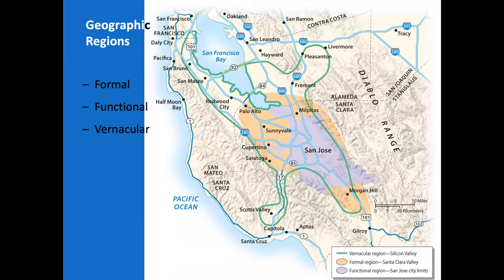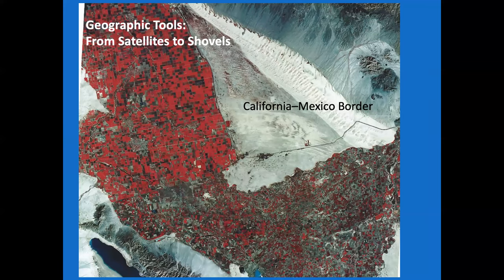We can talk about formal regions, functional regions, and vernacular regions. When you look at the California–Mexico border, this is where many of our fruits, vegetables, and citrus are grown. This is basically taking advantage of harnessing water from the Colorado River in order to turn a desert into very productive land — and not just in the US, but in Mexico as well.